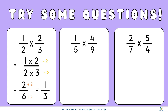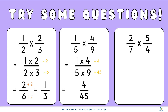The question in the middle: 1 over 5 times 4 over 9. Again, we multiply numerators by numerators and denominators by denominators. 1 times 4 gives us 4, and 5 times 9 gives us 45, so the new fraction is 4 over 45. Since 4 over 45 cannot be simplified, the final answer is just 4 over 45.